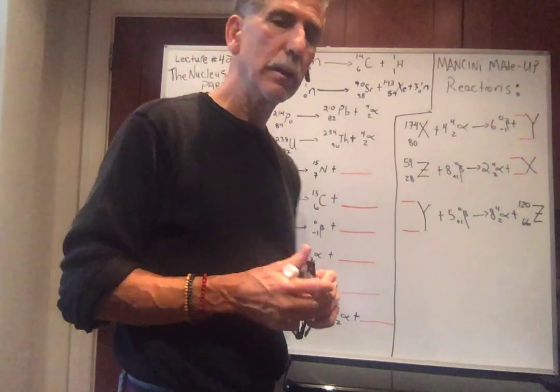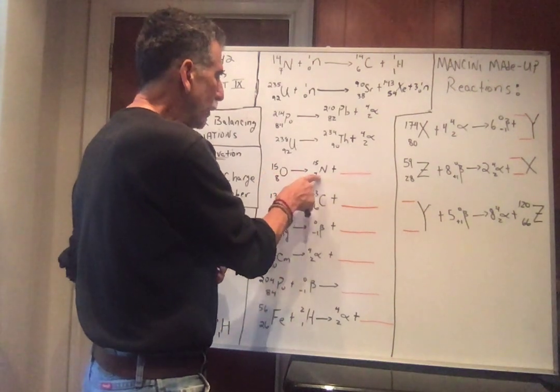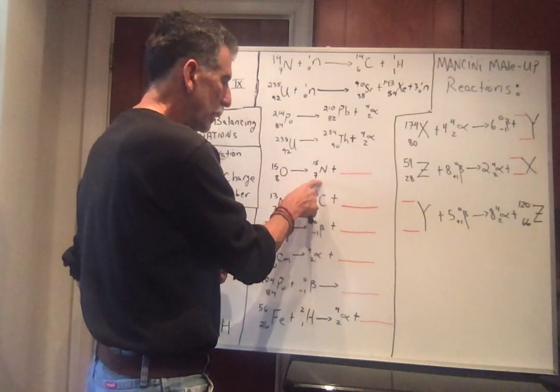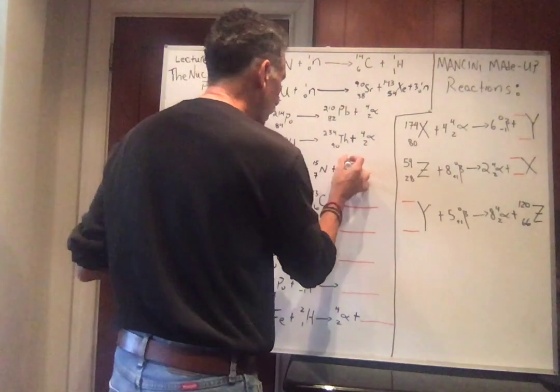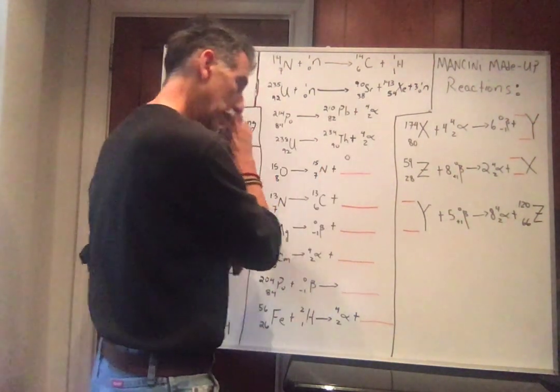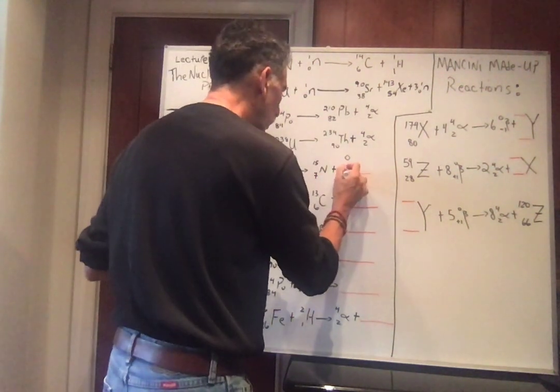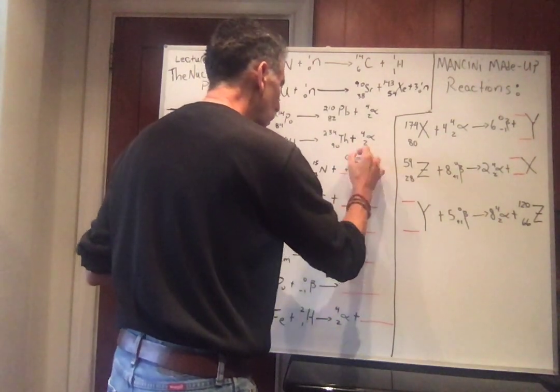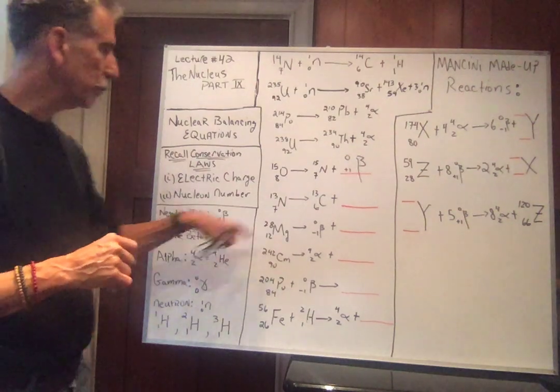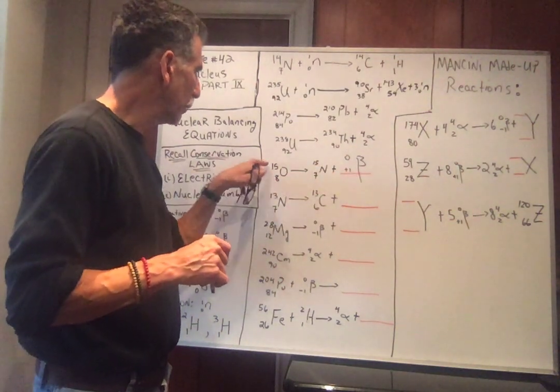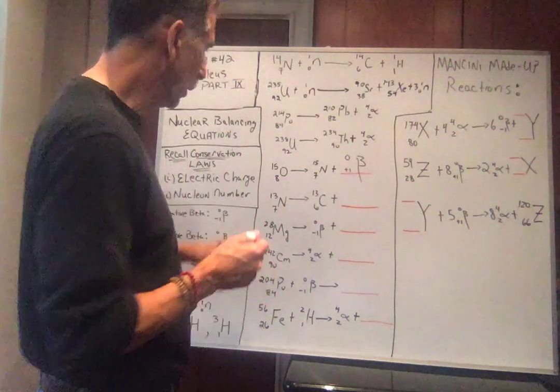Let's do some problems together. Oxygen 15 is going to nitrogen, which has seven protons, and 15. So 15, 15, whatever this is, has to have a zero up there. Seven plus what is eight? Well, it looks like one. What is that particle? It's a positive beta decay. Positive beta. One plus seven is eight. 15 plus zero is 15. Very difficult.